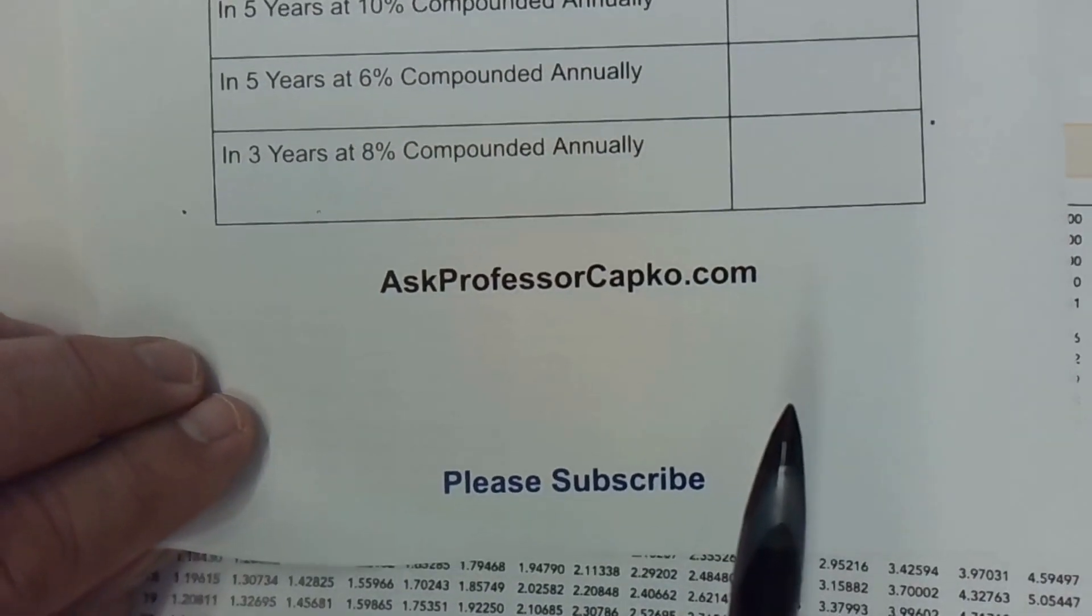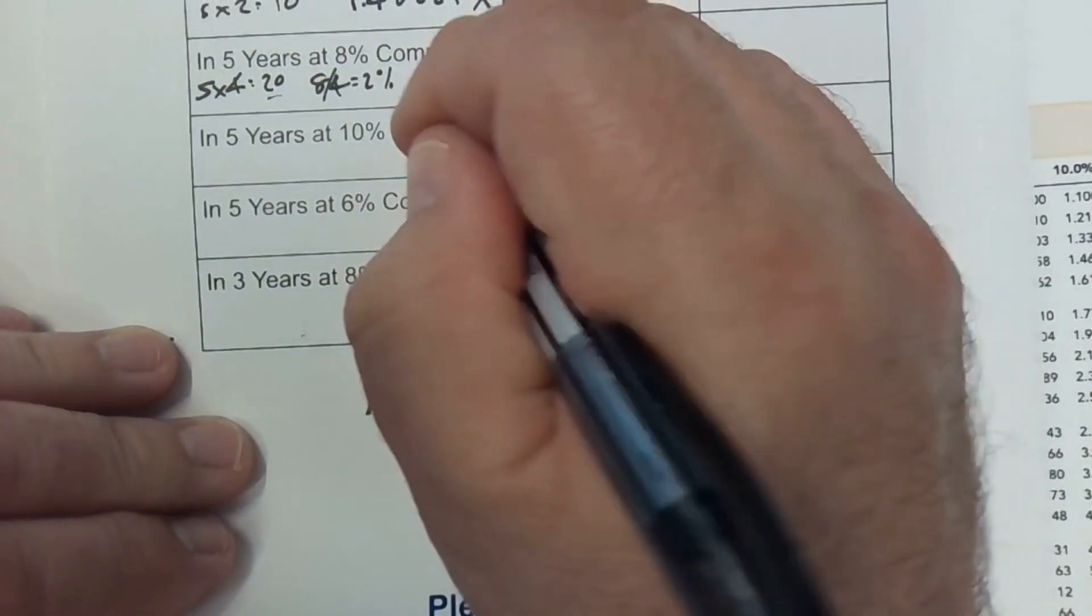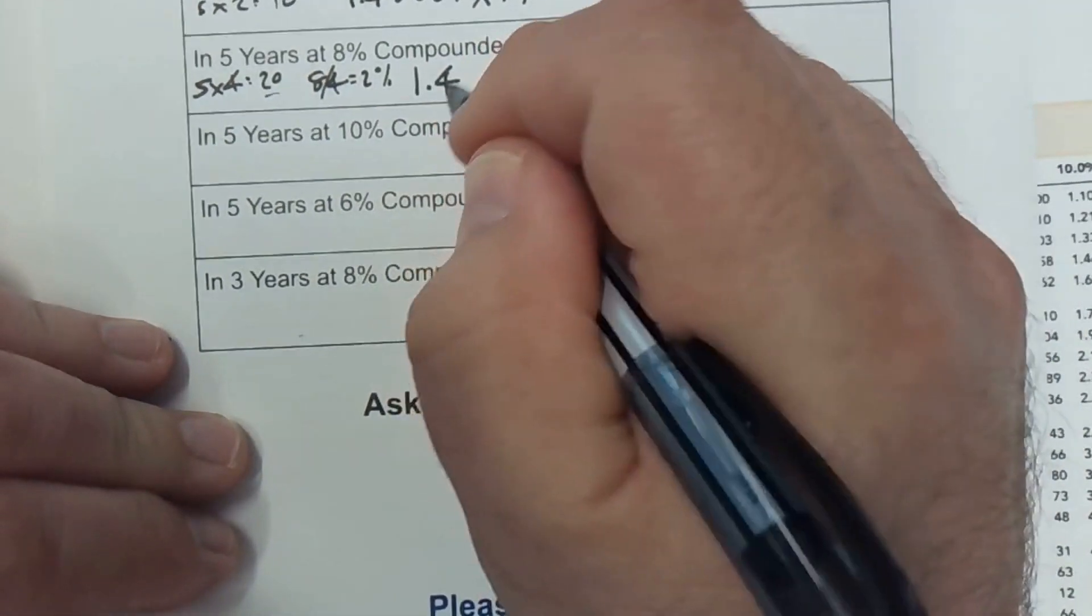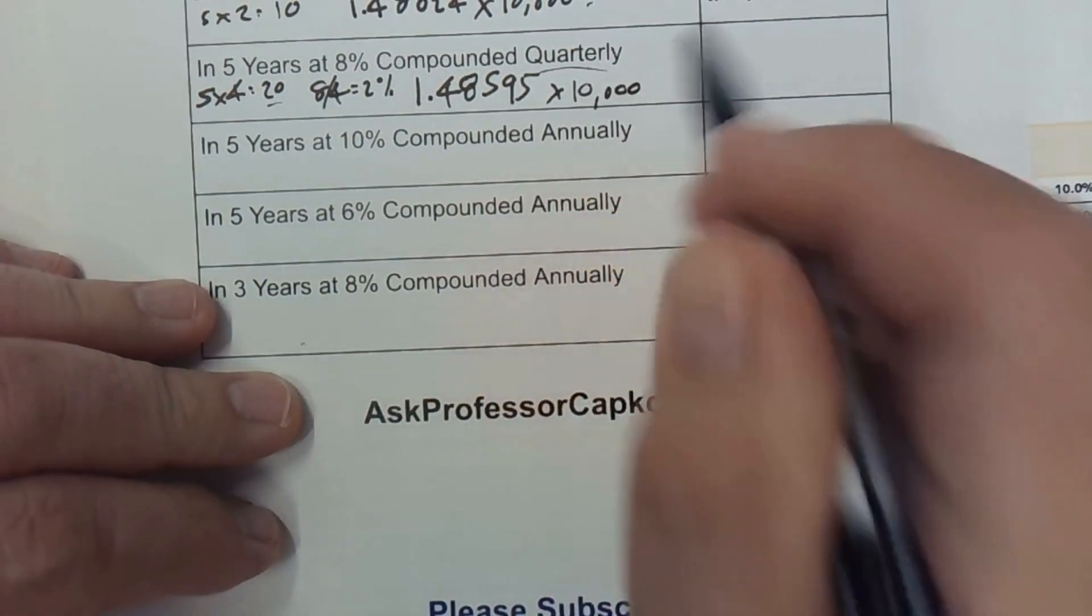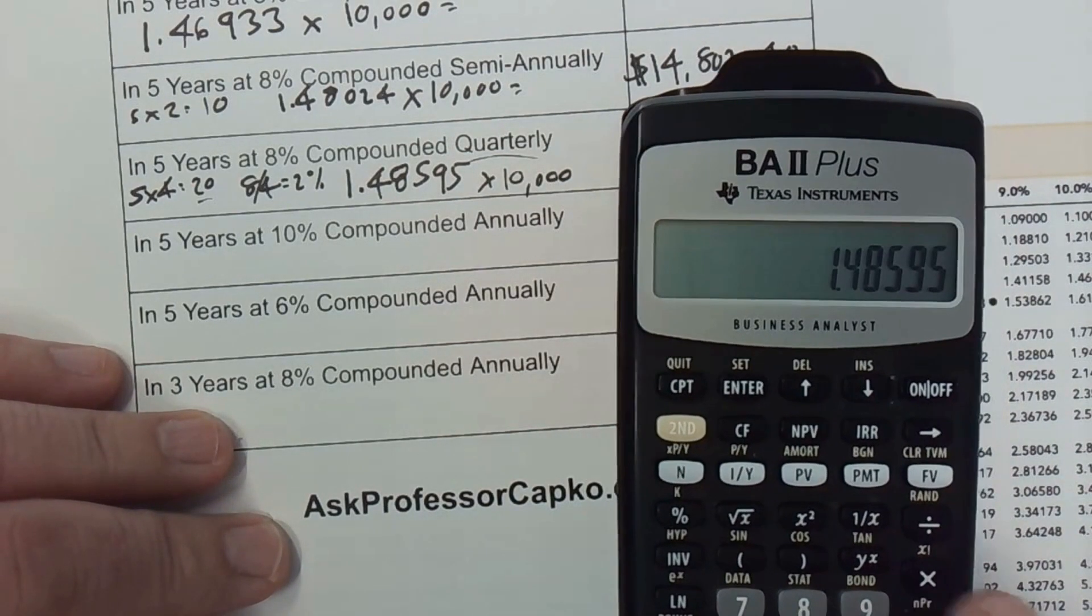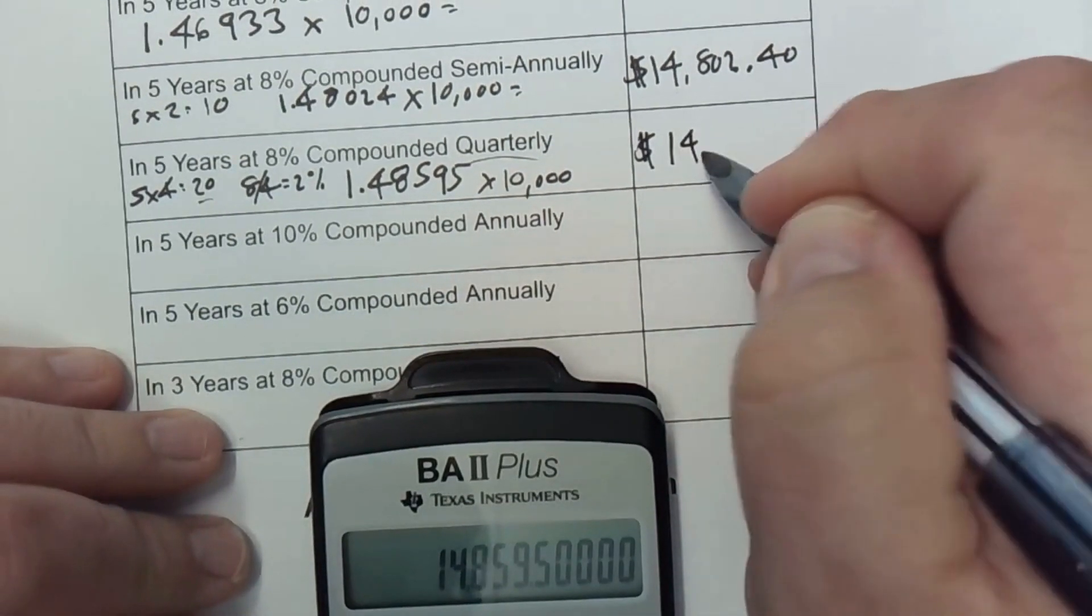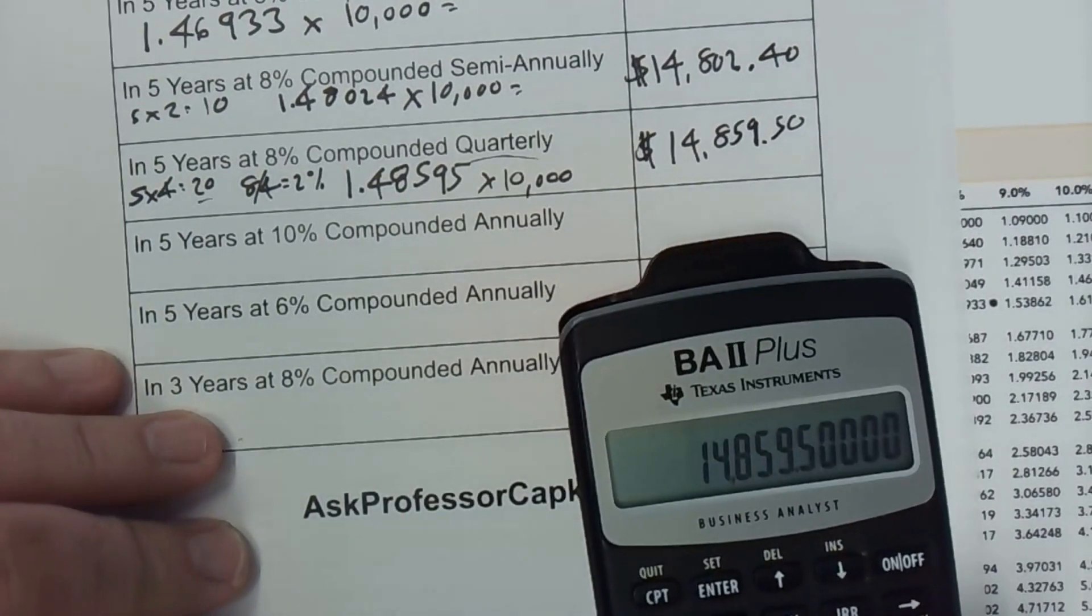Let me see if I can get these both on the screen at the same time. I have 1.48595. Let's go ahead and multiply that by the 10,000. 1.48595 times 10,000 is equal to $14,859.50. Again, it's gone up because there's more compounding periods during those five years.